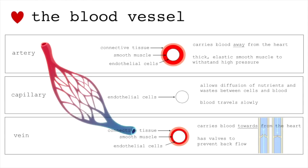So the blood vessel. The red part represents the artery, the web-like structure — the thin structure — represents the capillary, and the blue part represents the vein. The vein is not actually blue. It appears blue because of other reasons; it relates to wavelengths and physics-y stuff, so Google it if you're very curious.